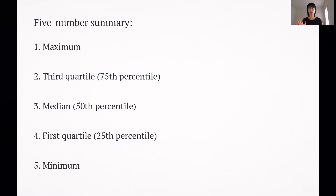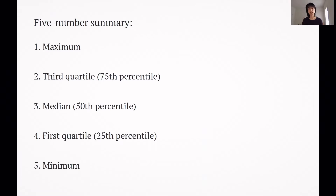Box and whisker plots start with what's known as the five-number summary: the maximum, or the largest value in your data set; the third quartile, also known as the 75th percentile; the median, or the 50th percentile; the first quartile, or the 25th percentile; and the minimum, or the smallest value in your data set.